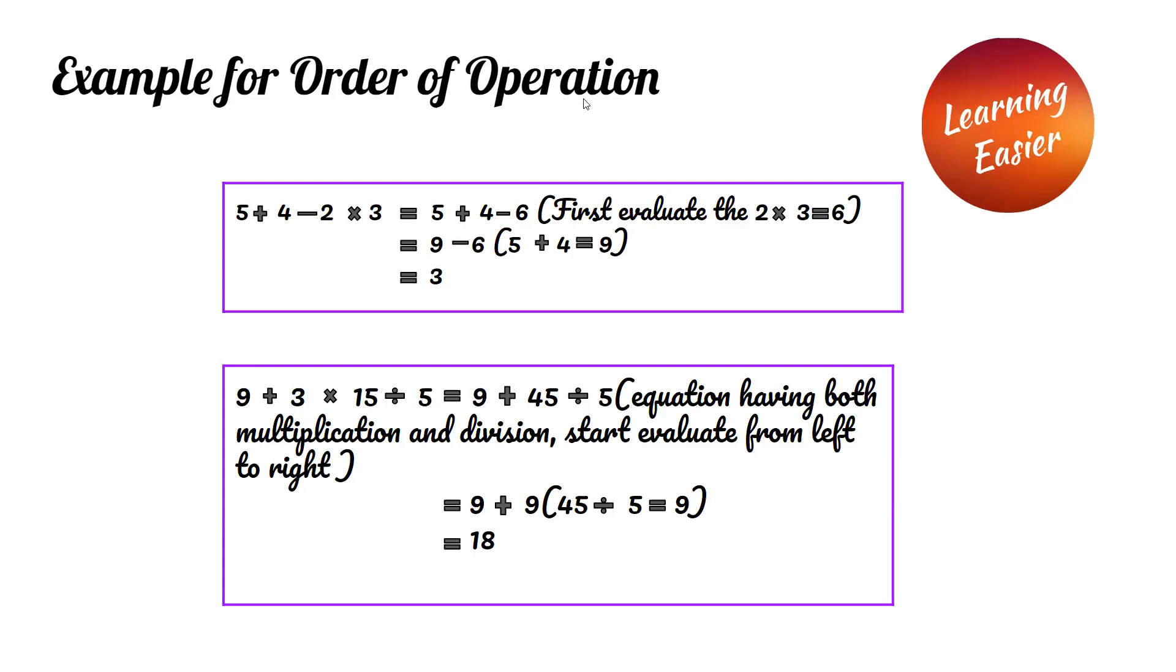Example for order of operation: 5 plus 4 minus 2 times 3. By using PEMDAS, we have to do multiplication first. 2 times 3 is 6. Since we have both addition and subtraction, we do it from left to right. We do 5 plus 4, which is 9. 9 minus 6 is 3. So 3 is the answer for this problem.